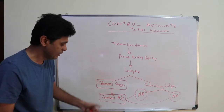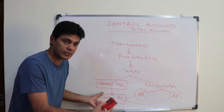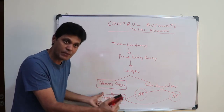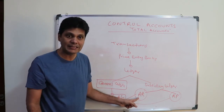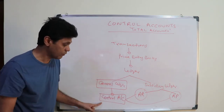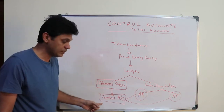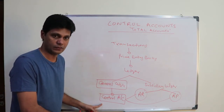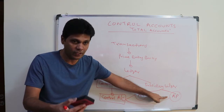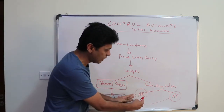The control account is also known as the total account because we don't record individual customer-wise or supplier-wise details — only the summary. For example, if the accounts receivable ledger has 100 customers, the control account records only the total. Similarly for accounts payable, we record only the summary, not individual supplier details.